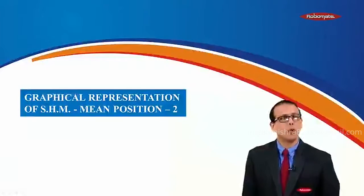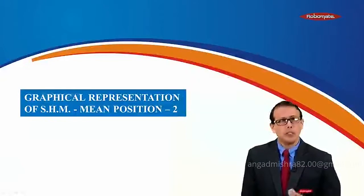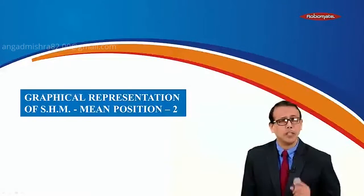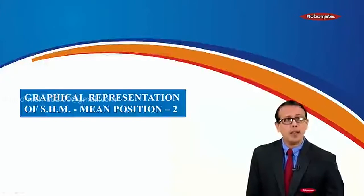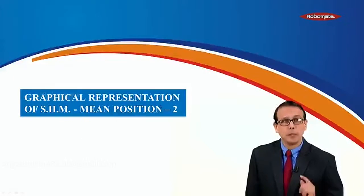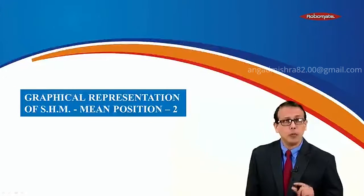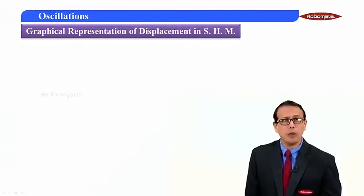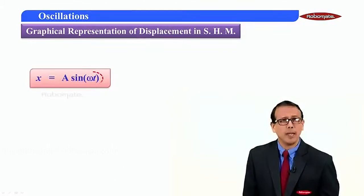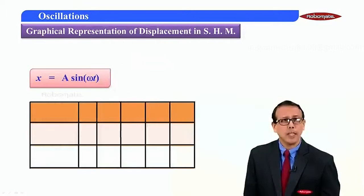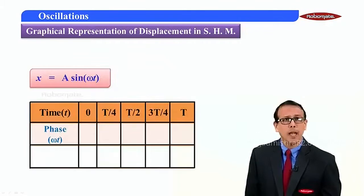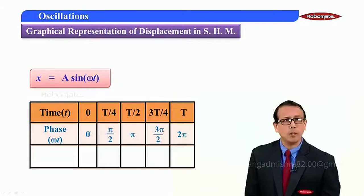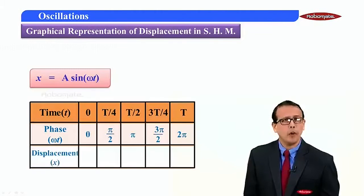Hello students, welcome back to the next module of the chapter Oscillation. In the last module we started with the graphical representation of SHM. We have already derived the formula of x, v, and a, taking care of the special condition starting from mean position. I also filled up a table for different values of t, showing the different values of omega t. Let's continue further in this module.